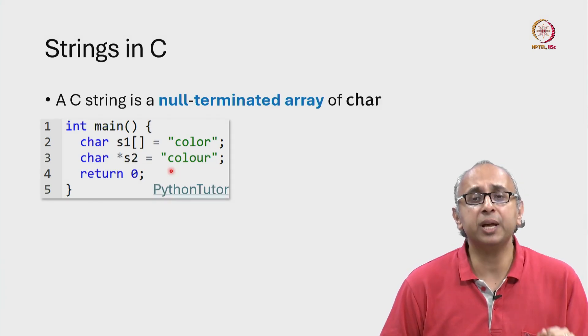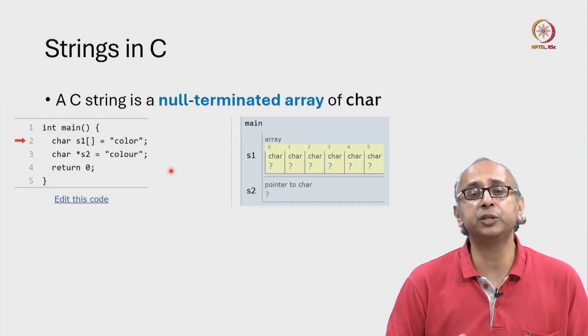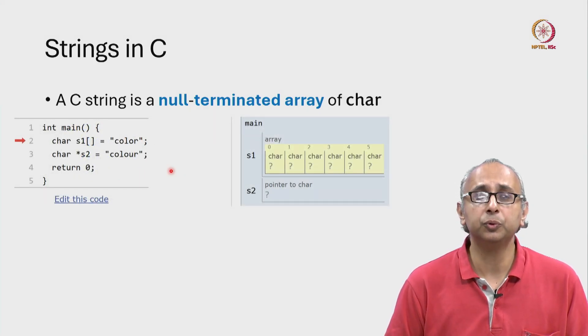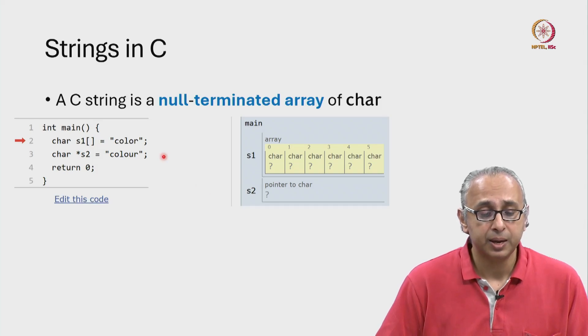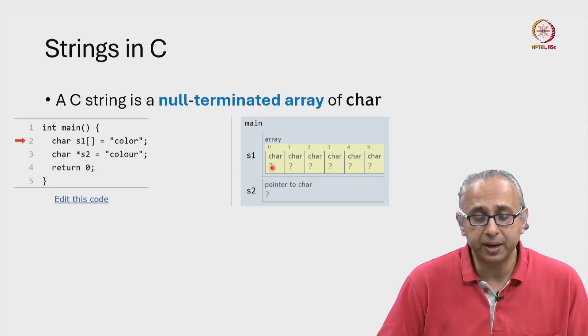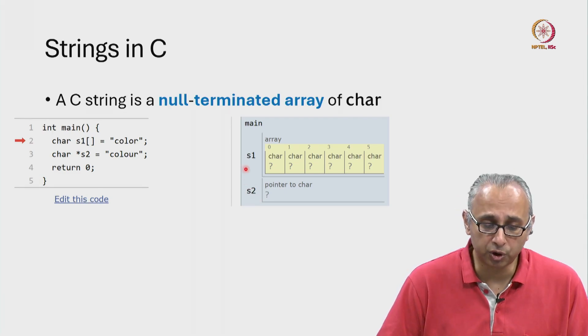When we visualize this code on Python tutor, before executing line 2, we will see that S1 and S2 are uninitialized. That's why you see the question marks. But you notice that the way Python tutor is visualizing S1 and S2 is quite different. Let's first focus on S1.